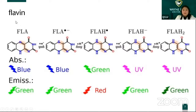The whole family is also called Flavin. If absorbing blue light, it will emit green light. If it gains a proton, it absorbs green light and emits red light. And if it gains electrons, it absorbs UV light and emits green light.